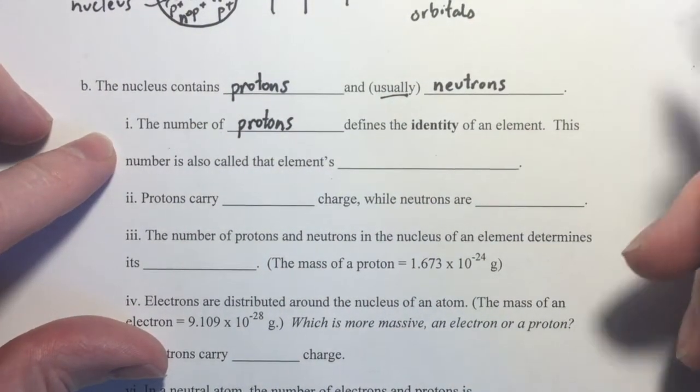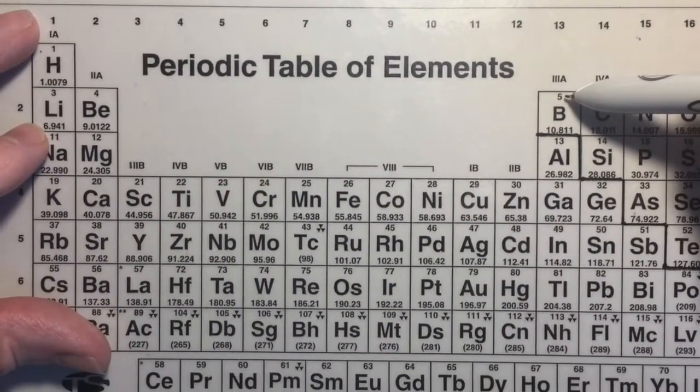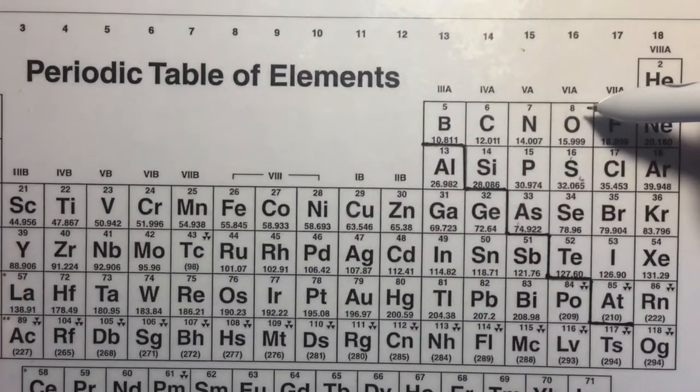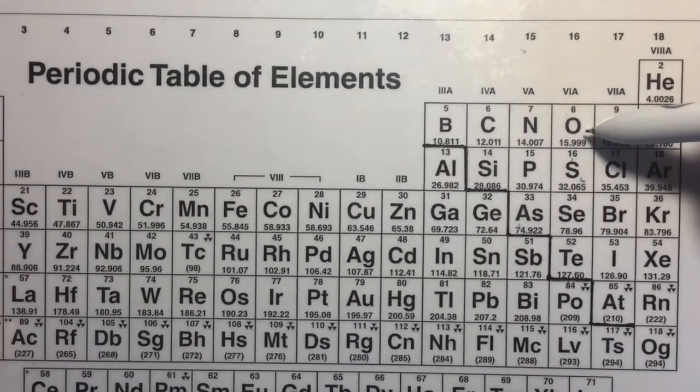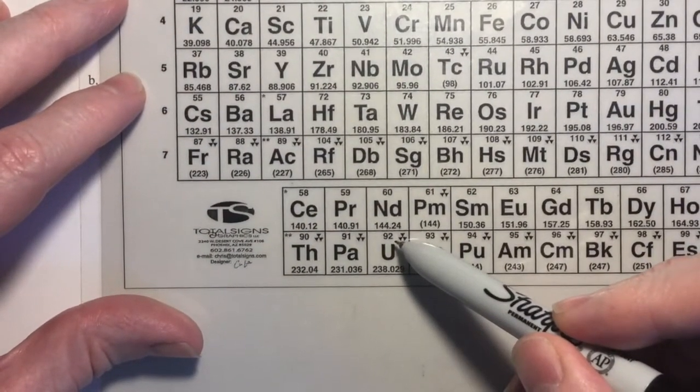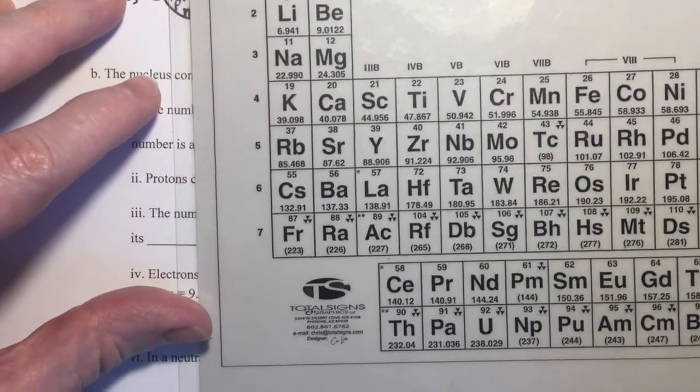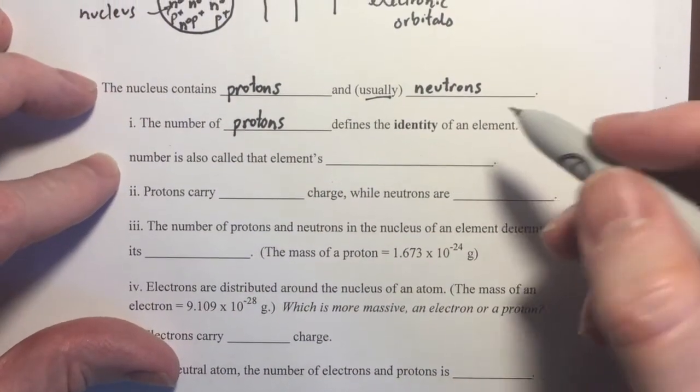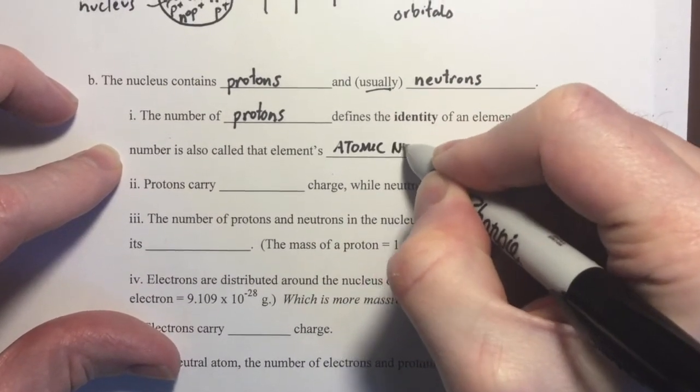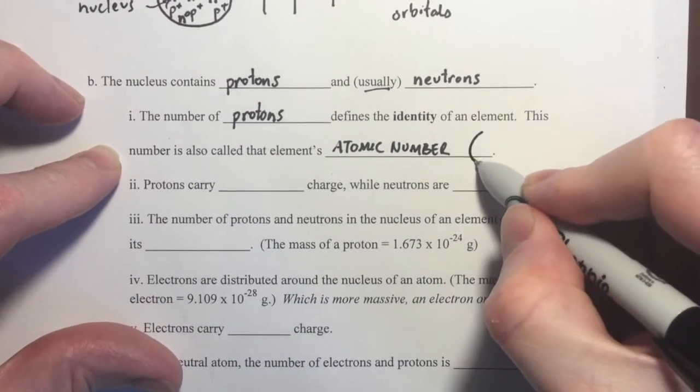So, for example, if it has, let's take a look at our periodic table. If it has five protons in its nucleus, it is defined as a boron atom. If it has eight protons in its nucleus, it is defined as an oxygen atom. So, the number of protons in the nucleus define the identity of the element. And that number is also called the element's atomic number.